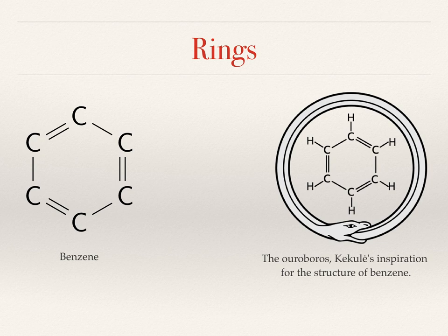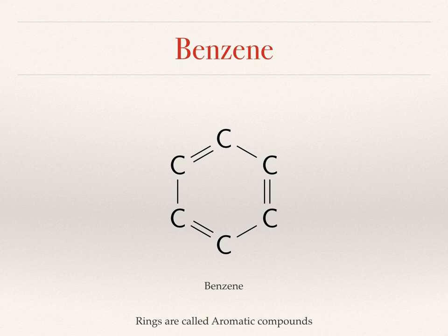We usually draw benzene as shown on the left with alternating single and double bonds, and you may see the bonds drawn in a switched position. If you look at the molecule drawn on the right you can see that the bonds are in a different position — it doesn't actually matter, it's all the same molecule, it's just the way it's drawn. Benzene used to be a common solvent but it's now known to be carcinogenic and has largely been phased out of even professional chemistry. About the only place you may encounter it is in fuel — petrol or gasoline.